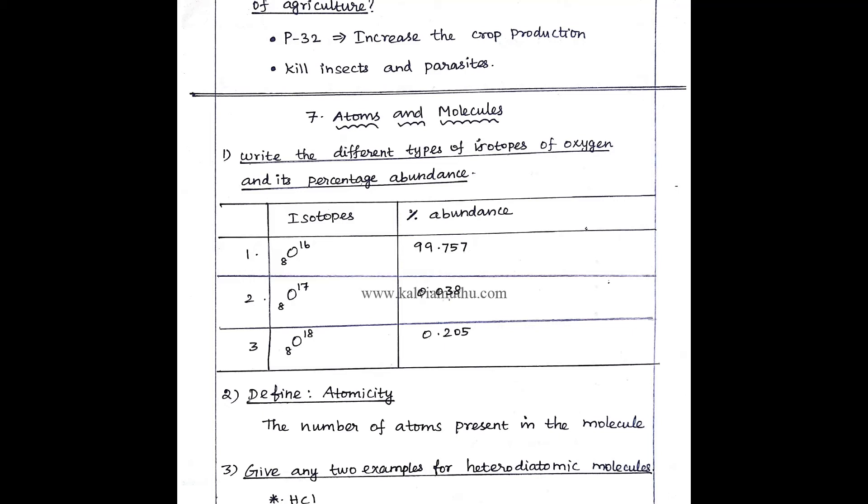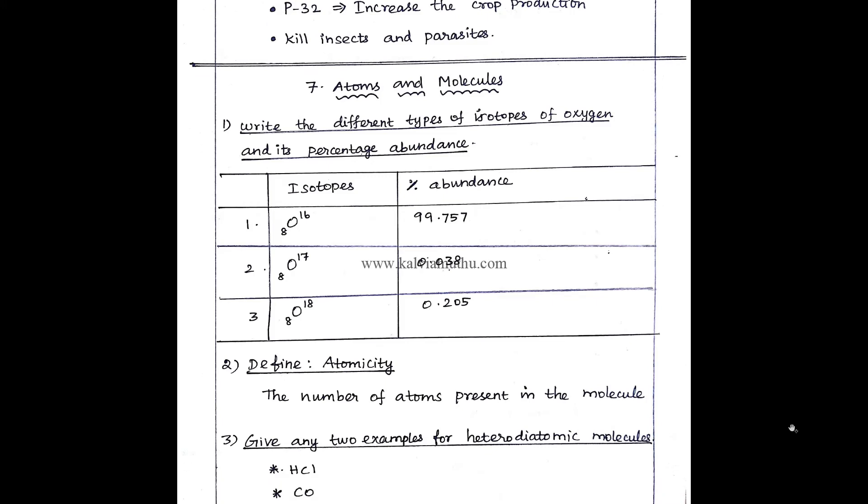So the first is 3 isotopes. O-16, O-17, O-18. Percentage of abundance: O-16 is 99.757%, O-17 is 0.038%, O-18 is 0.205%.